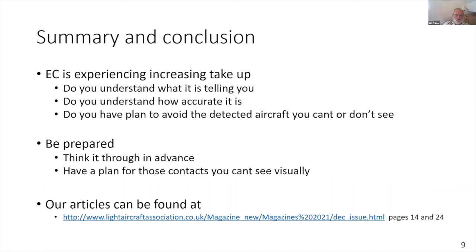To summarise: electronic conspicuity is experiencing increasing take-up. Do we all understand exactly what it's telling us, including its accuracy limitations — potentially 200 feet or even a thousand feet of altitude error? Do you have a plan to avoid detected aircraft you can't see? Be prepared and have a plan. These two presentations are based on articles in Light Aviation magazine, and reprints can be found on the Light Aircraft Association website.